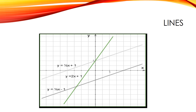Lines in coordinate geometry: in Euclidean geometry, a line is a straight curve. In coordinate geometry, lines in a Cartesian plane can be described algebraically by linear equations and linear functions. Every straight line in the plane can be represented by a first-degree equation with two variables. There are several approaches commonly used in coordinate geometry.